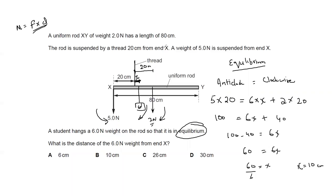However, the question asks for the distance between end X and the 6 newton weight. Since the thread is 20 cm from X and the weight is 10 cm further, the total distance is 20 + 10 = 30 cm. So the answer is D — 30 cm.